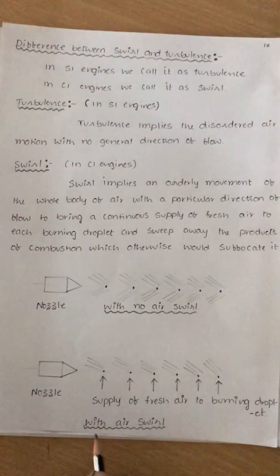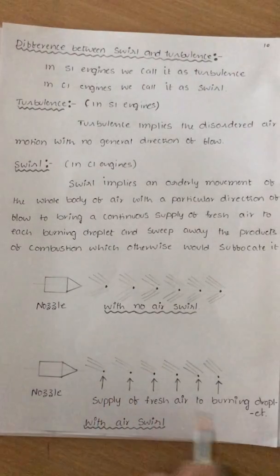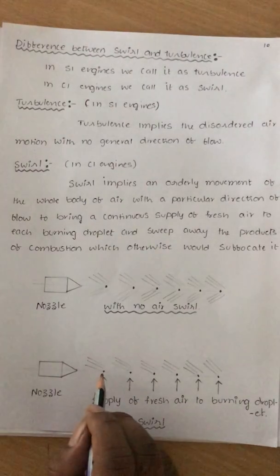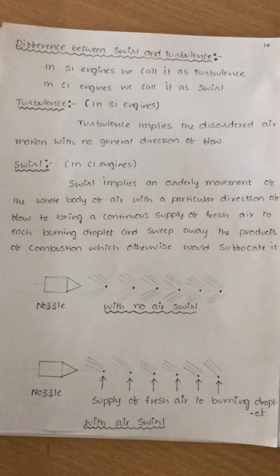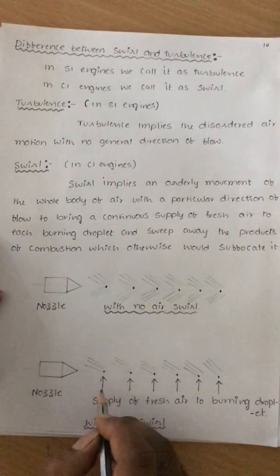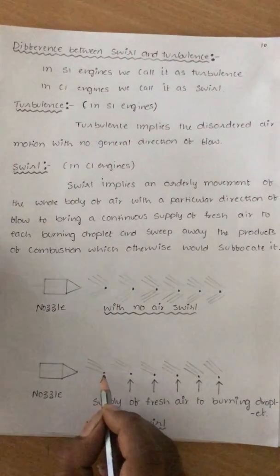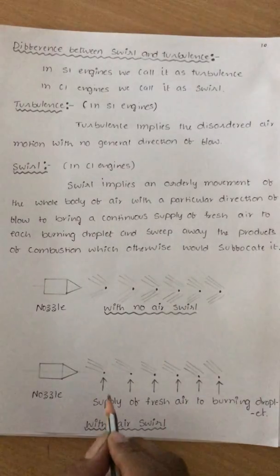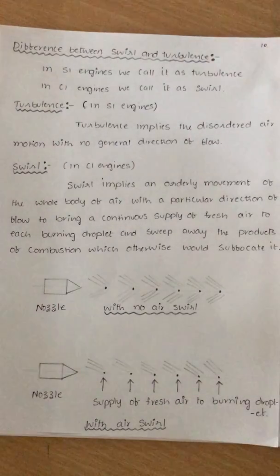With air swirl, fresh air is supplied to the burning droplets. If I supply swirl, that means fresh air is sent to the burning droplets, so that the burning droplets can take oxygen and complete their burning process. In addition, the fresh air has to sweep away the products of combustion. If the products of combustion are present, the burning droplets are affected and combustion is not completed. So with air swirl, fresh air enters, is supplied to the burning droplets, and is utilized to sweep away the products of combustion. Thank you very much.